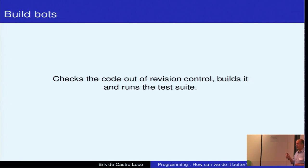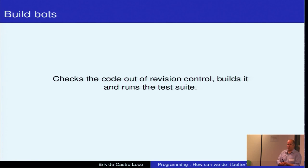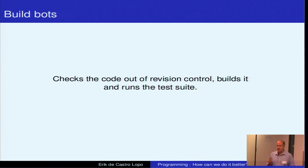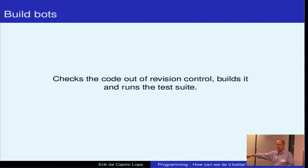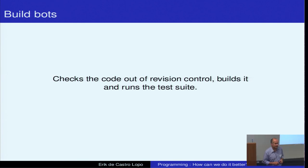Build bots. Once you have your code in revision control and you've got a test suite, you probably want a build bot which, once a day or so, pulls the latest revision out of revision control, builds it and runs the test suite. This is particularly useful for cases where the code that you as a developer are working on builds fine because of something in your environment that is not there when it's checked out and built on another machine. Build bots will find things like that.